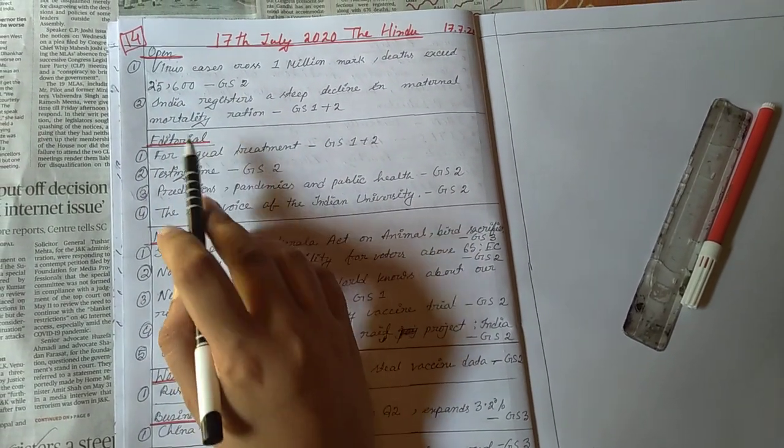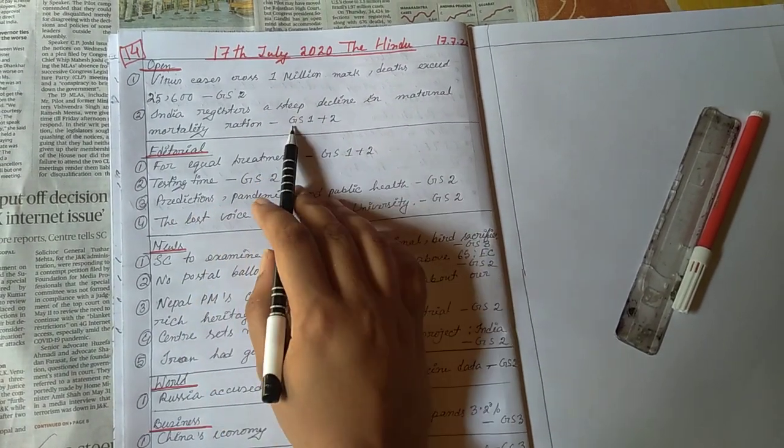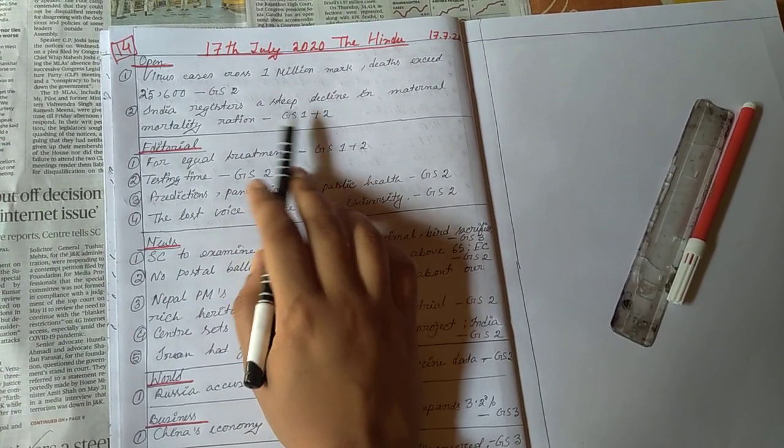This is from GS paper 2, number 2. India registers a steep decline in maternal mortality rate ratio, GS paper 1 plus 2.